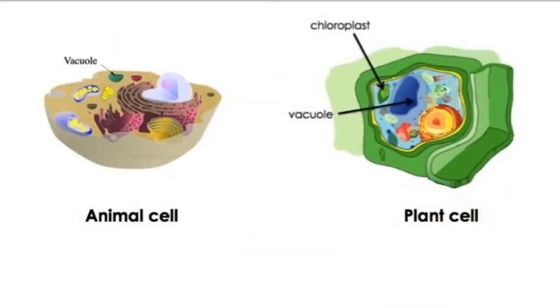Mature plant cells often have a large central space surrounded by a membrane called a vacuole. Animal cells do contain vacuoles, but they are only small temporary structures.